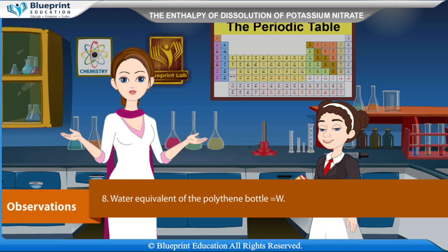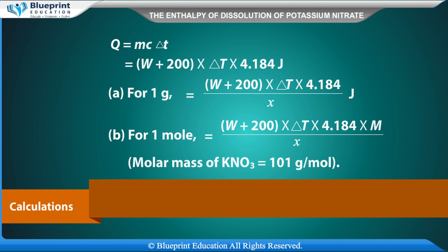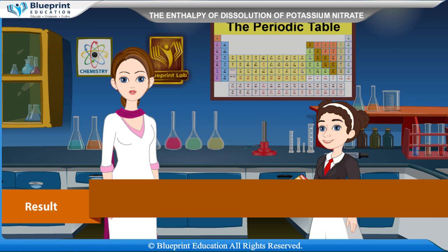Water equivalent of the polythene bottle is equal to W. Calculation: Q is equal to MC delta T, which equals (W + 200) multiplied by delta T multiplied by 4.184 joules. For 1 mole: Q equals (W + 200) multiplied by delta T multiplied by 4.184 multiplied by M divided by x. Molar mass of KNO3 is equal to 101 grams per mol.